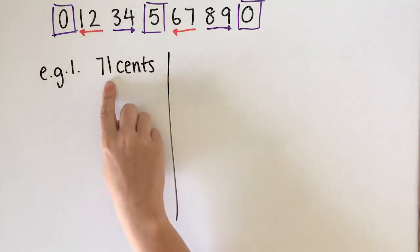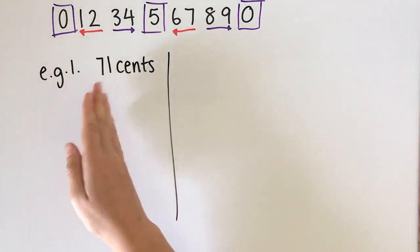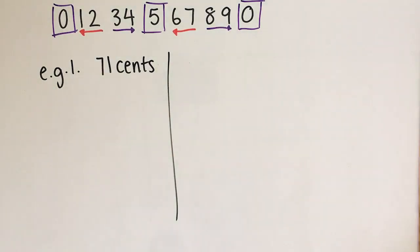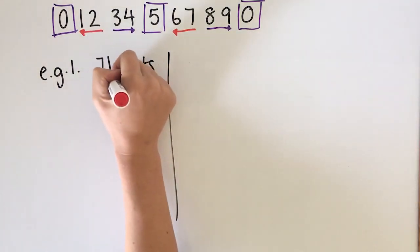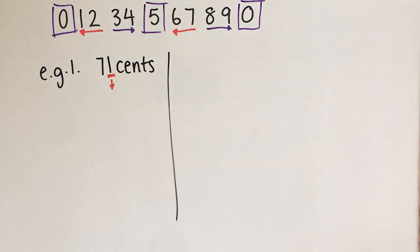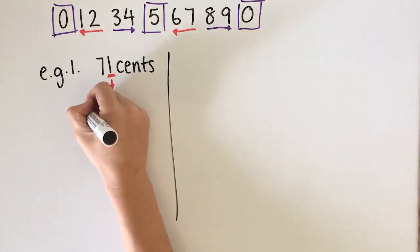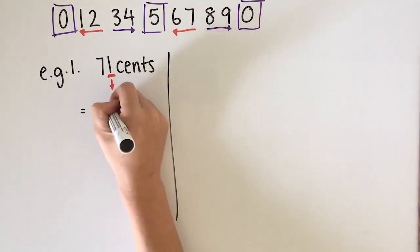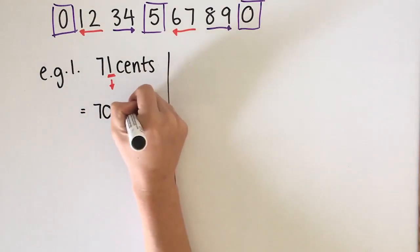Our furthest one to the right because if we're talking about money these are technically decimals like 0.71. And one tells us that we need to round down. So that means that if we're rounding to the nearest five cents this would round to 70 cents.